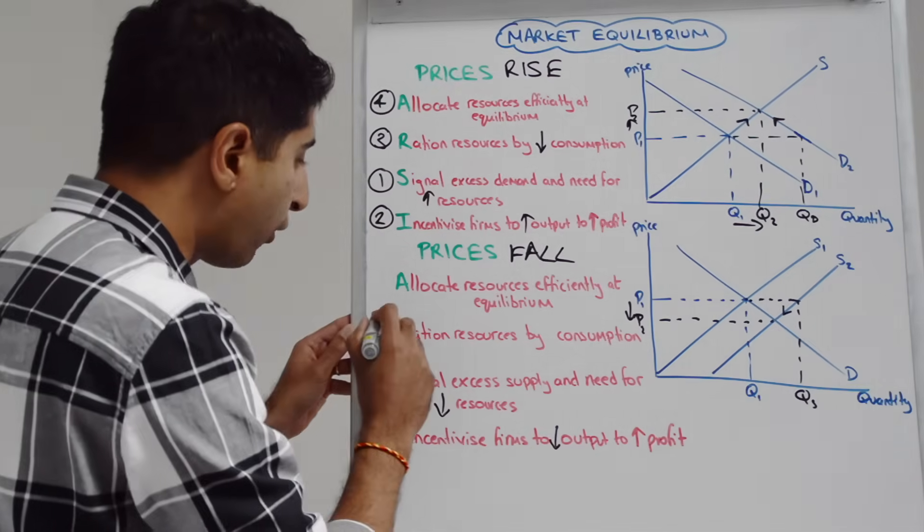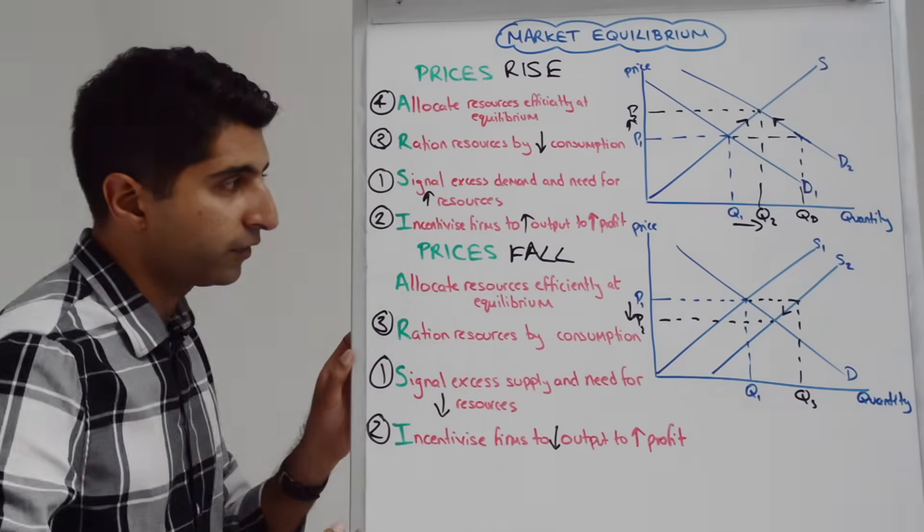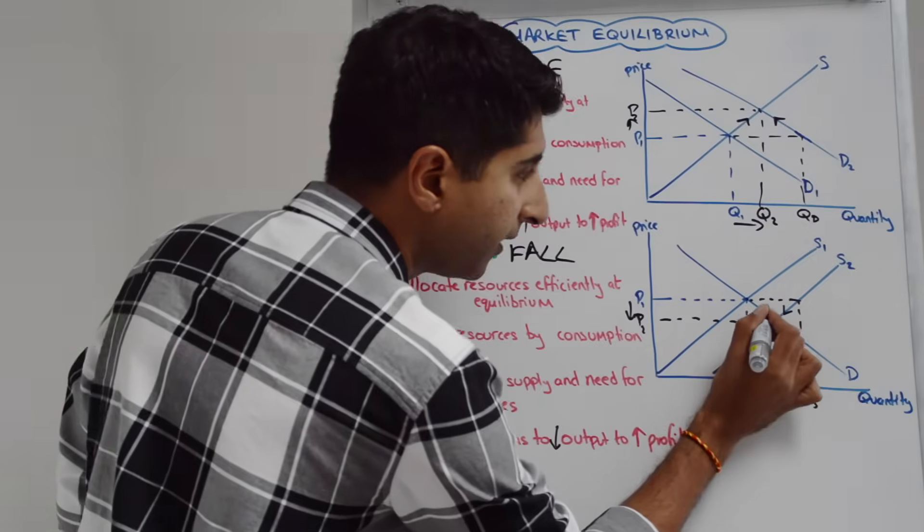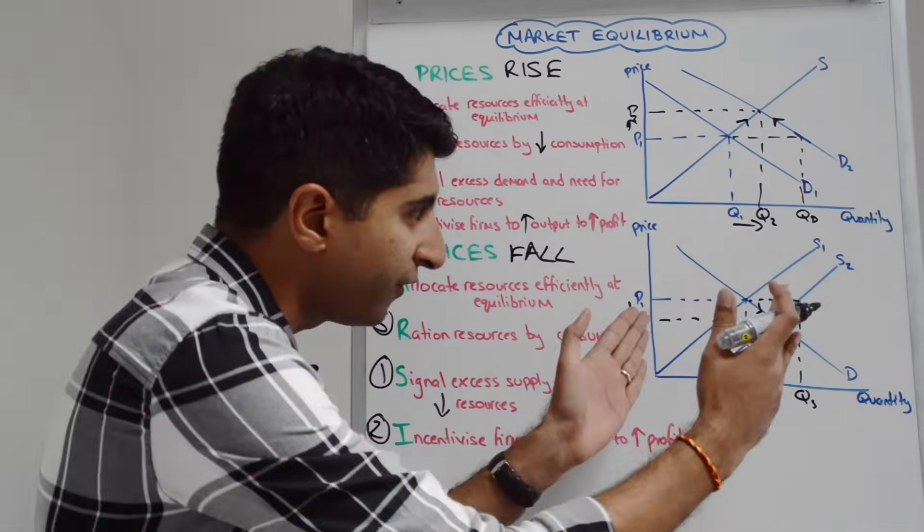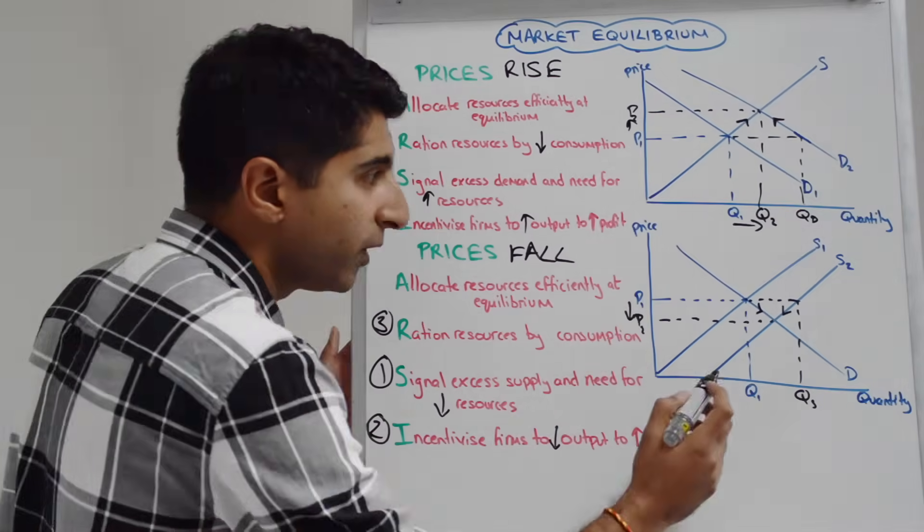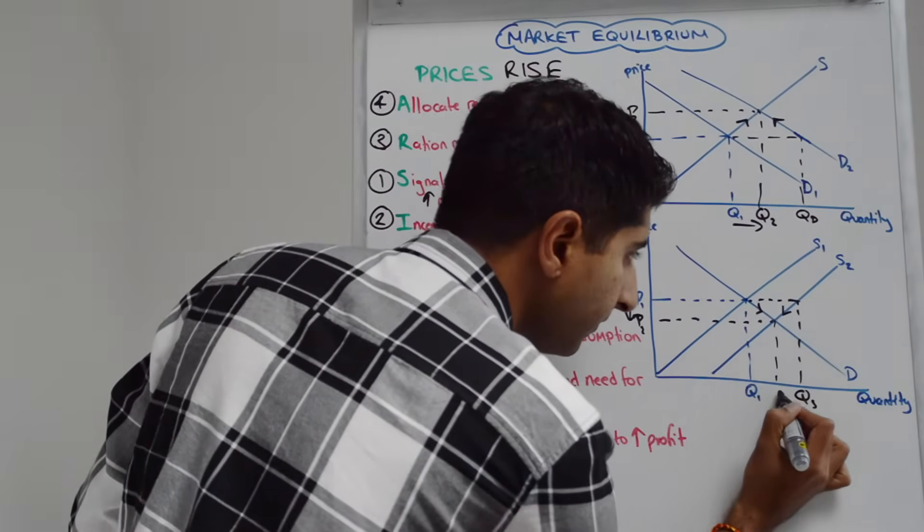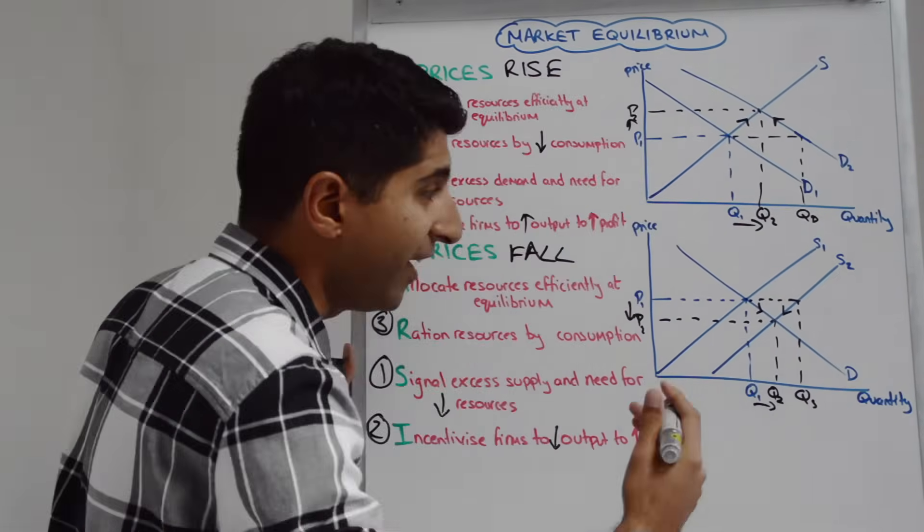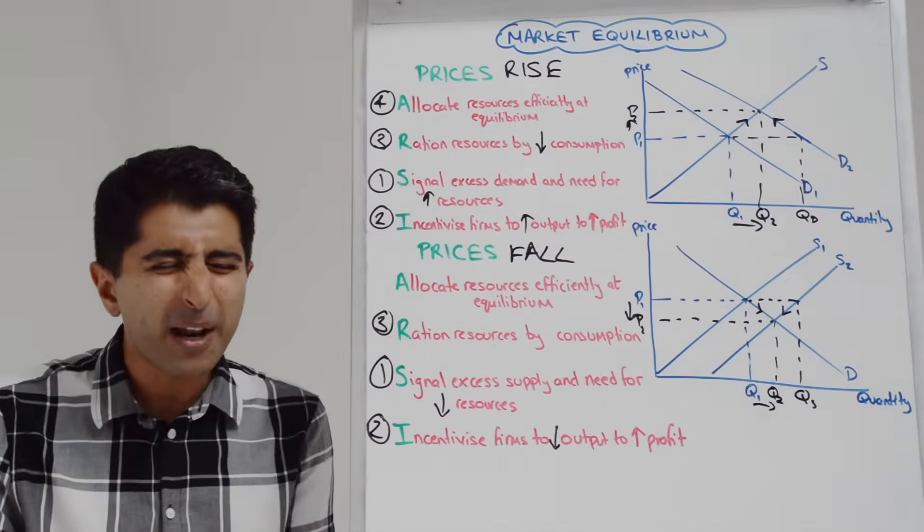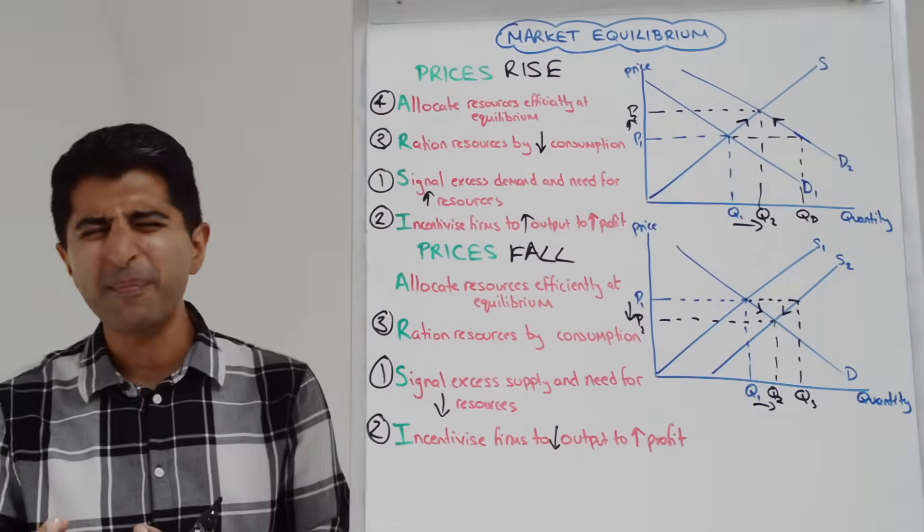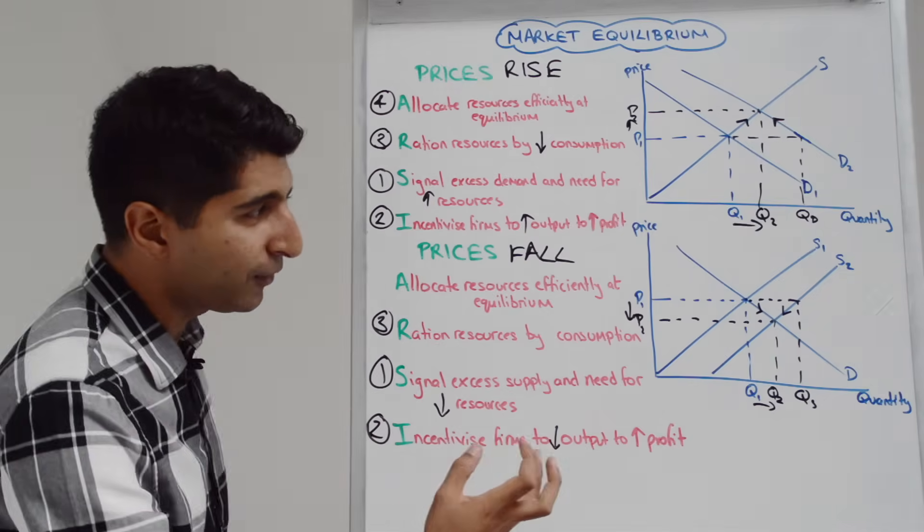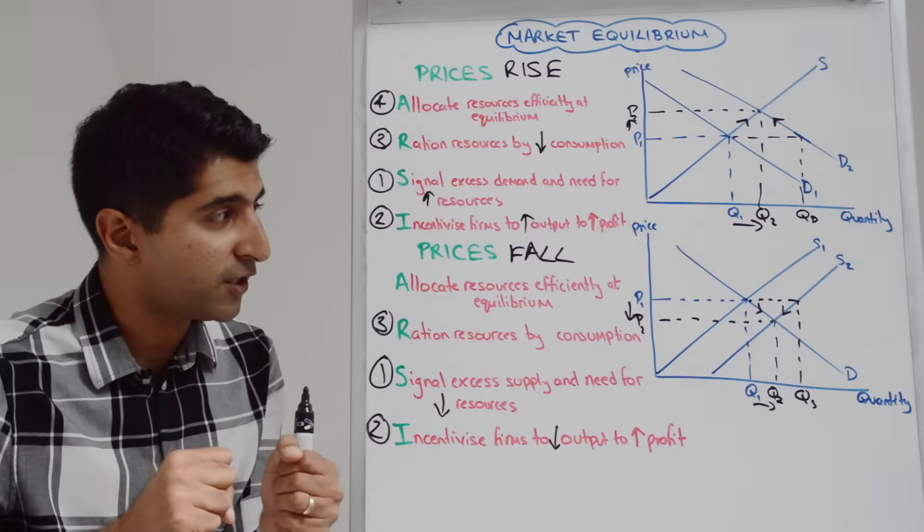At the same time, lower prices ration scarce resources, in this case, by encouraging more demand, the expansion or the extension along the demand curve shows that effect, put those last two effects together, where we ended up, we've ended up at a new quantity, Q2, wonderful, this is at equilibrium, we know equilibrium is allocative efficiency, it's like magic, right, these functions of the price mechanism are magical things, absolutely, lo and behold, equilibrium, allocative efficiency, excess supply completely taken away.